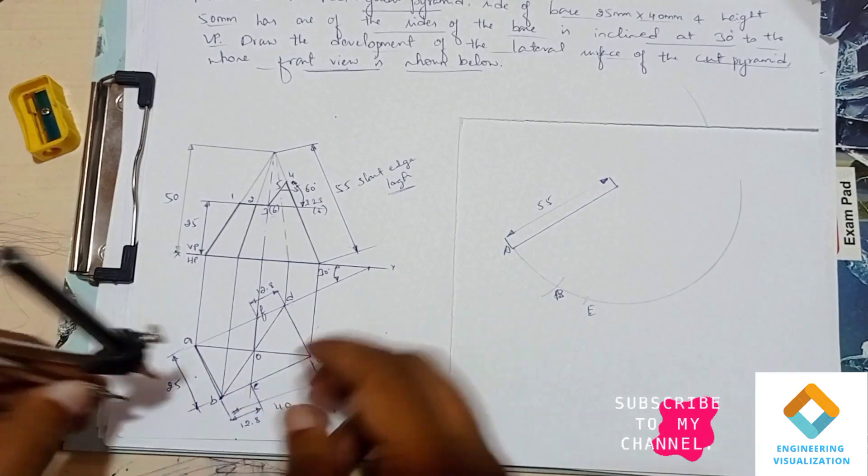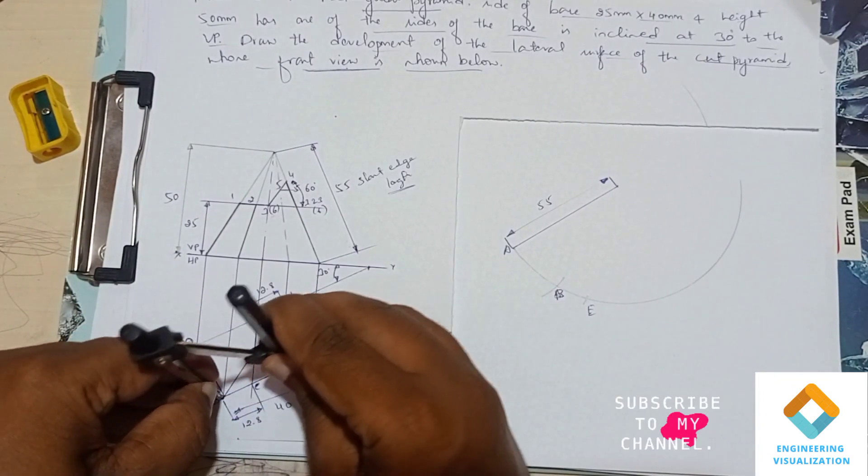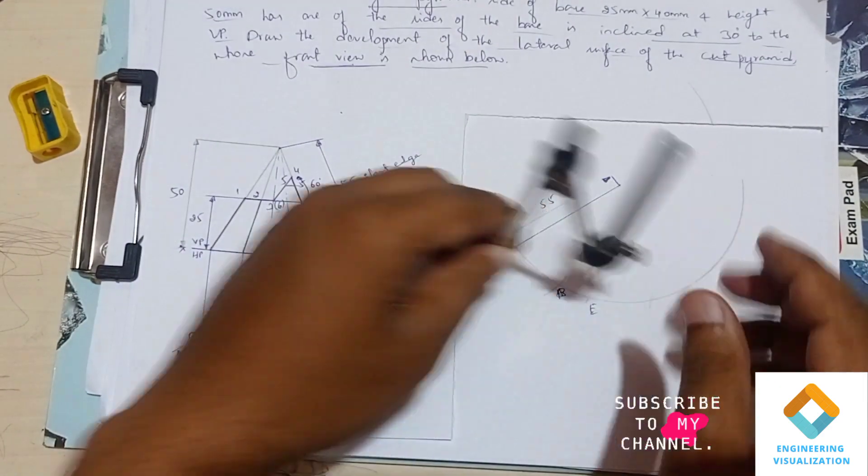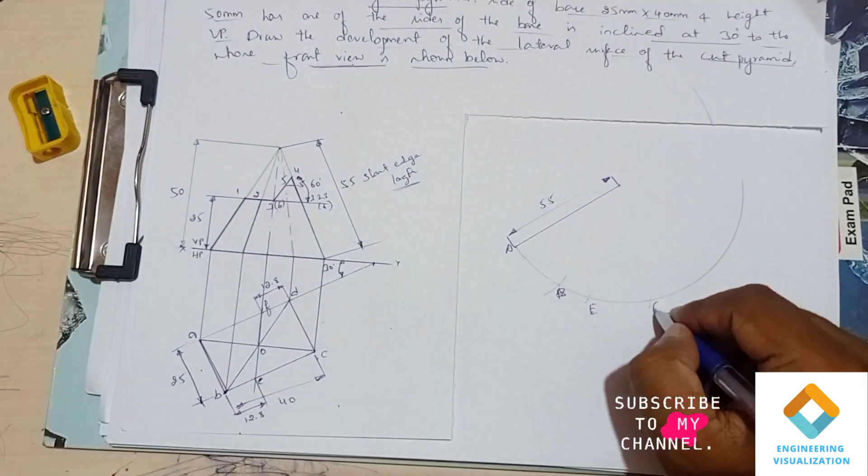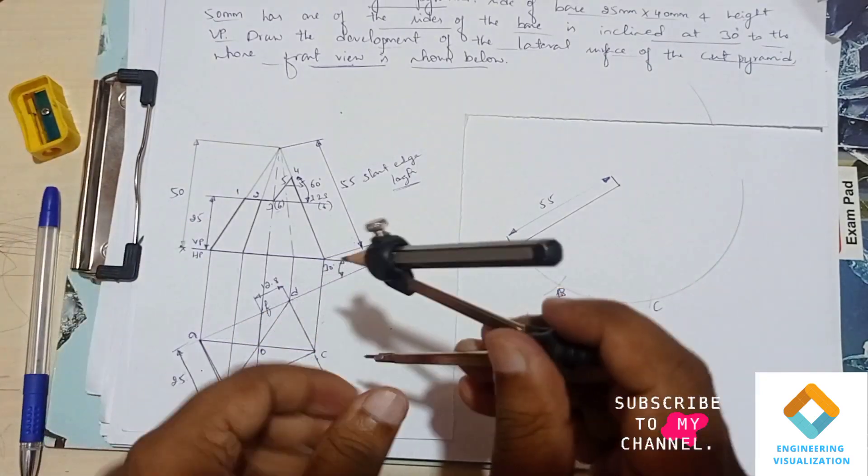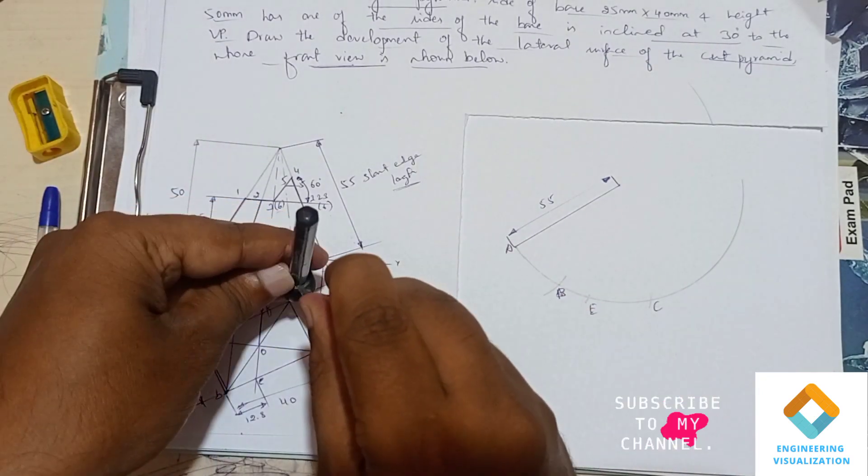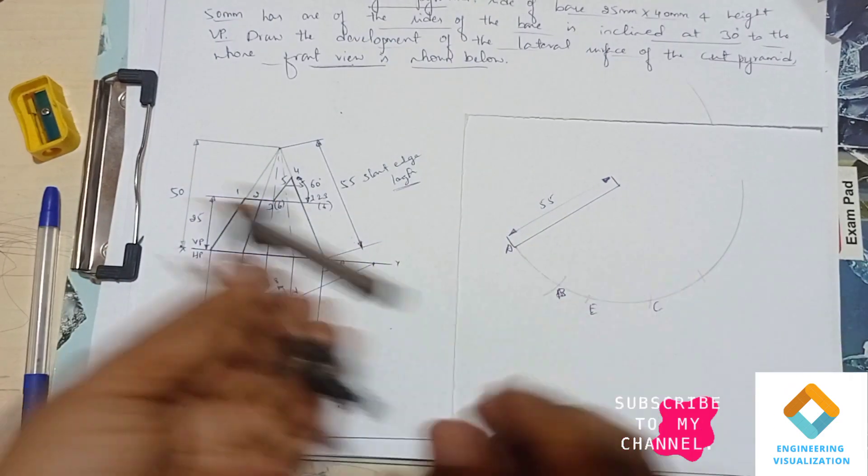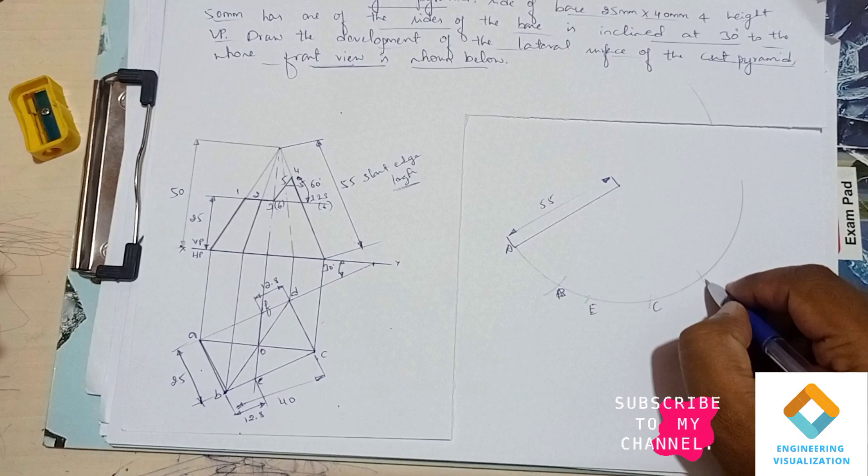Now measure the length of B to C. B to C measured from the top view is 40, mark C here. Now measure the length CD. CD length is 25 and cut the arc.